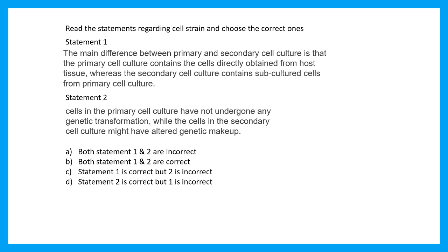The main difference between primary and secondary culture is that the primary culture contains the cells directly obtained from host tissues, whereas the secondary culture contains subcultured cells from primary culture. Statement two says cells in the primary culture have not undergone any genetic transformation, while the cells in the secondary culture might have altered genetic makeup. And both these statements are actually true. That's the correct option.